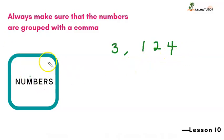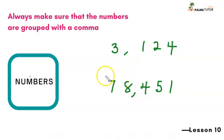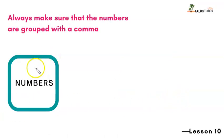Another one: 78,451. This one doesn't have a comma written, so I'll add it — one, two, three — there should be a comma. This is still within the group of thousands. So how many thousands do I have? Seventy-eight thousand, four hundred and fifty-one. Isn't that amazing?